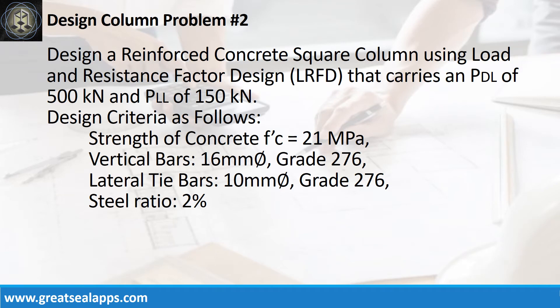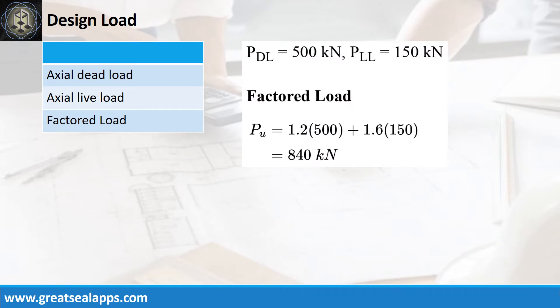Design a reinforced concrete square column using load and resistance factor design that carries an actual dead load of 500kN and actual live load of 150kN. Design criteria: strength of concrete 21MPa, vertical bars 16mm at grade 276, lateral tie bars 10mm at grade 276, steel ratio 2%. This gives a factored actual load of 840kN.